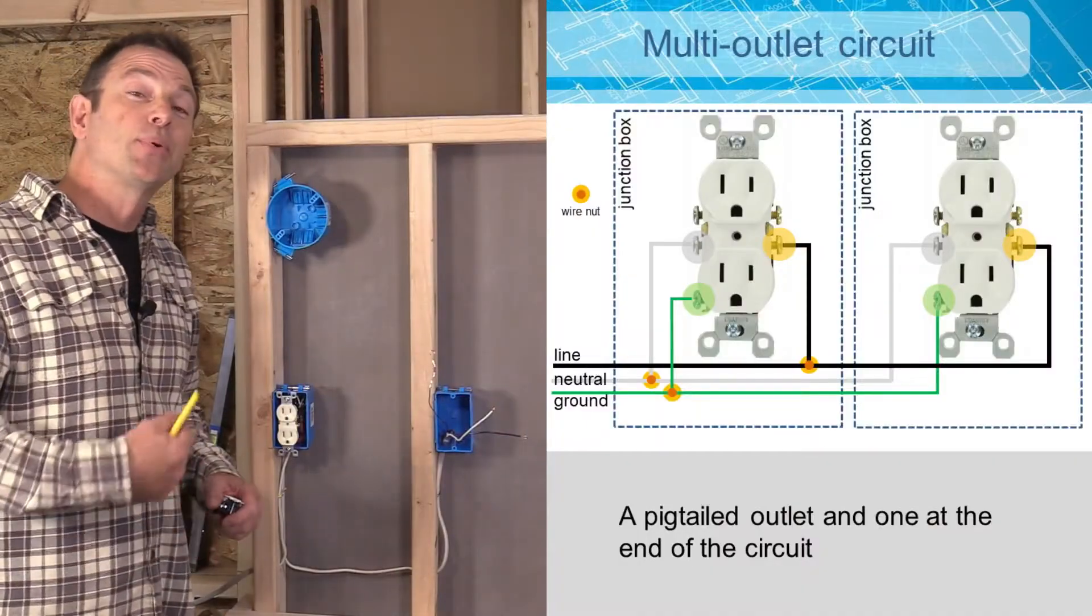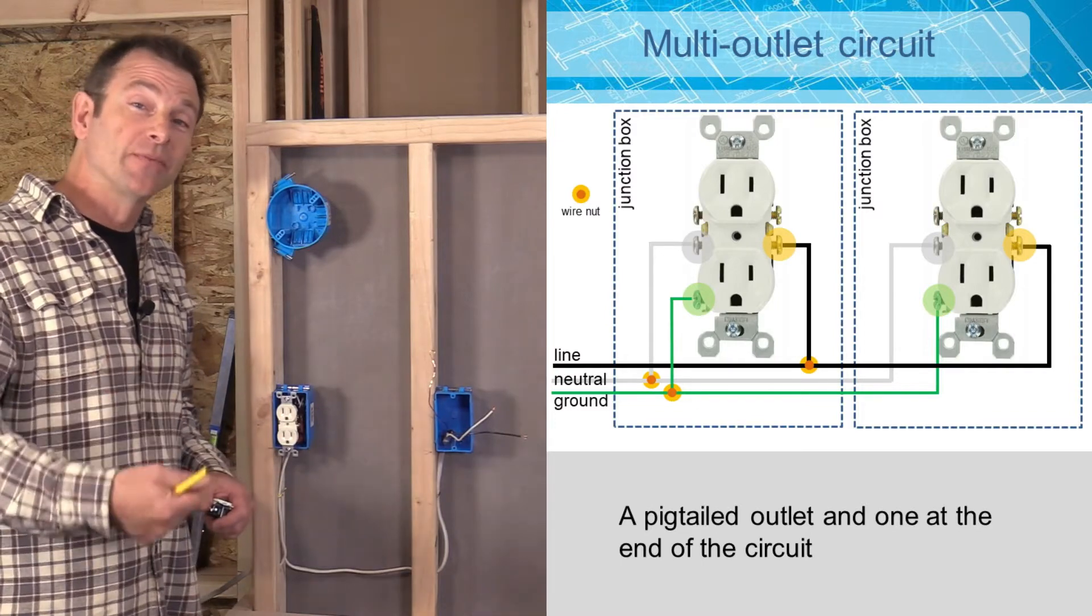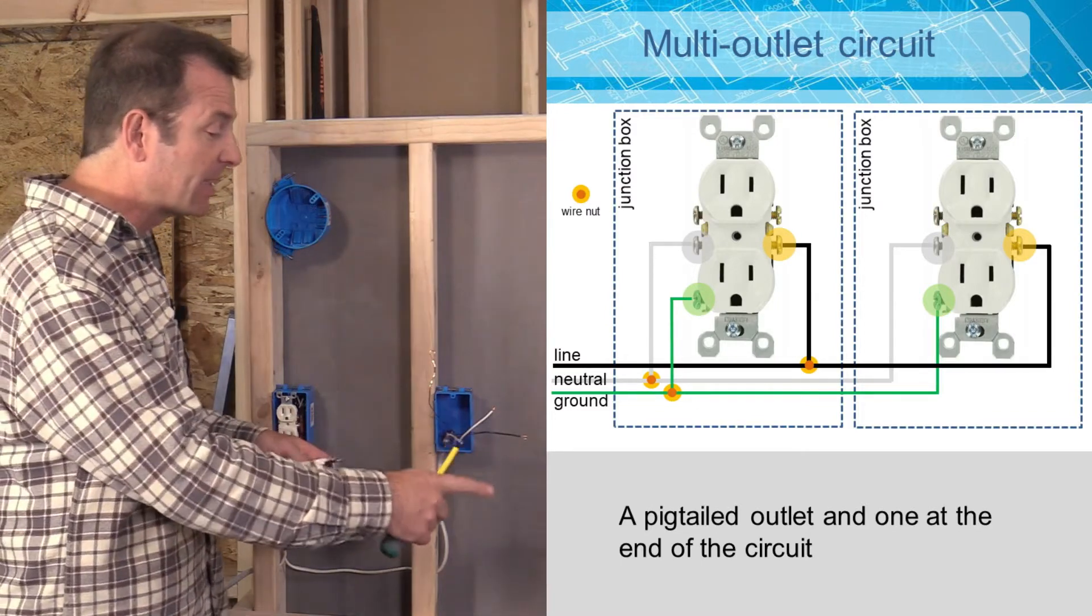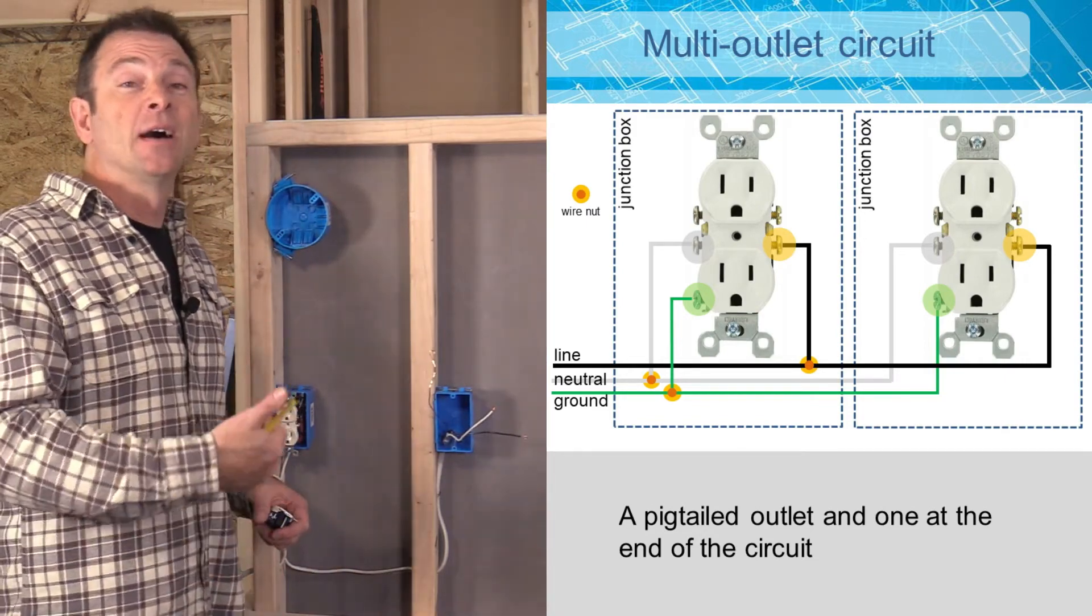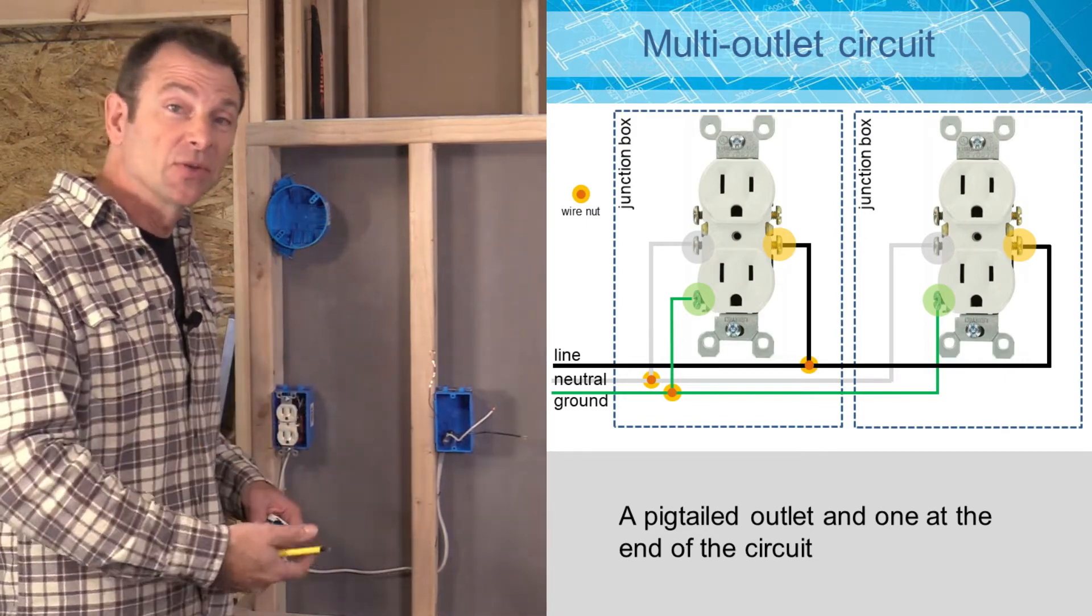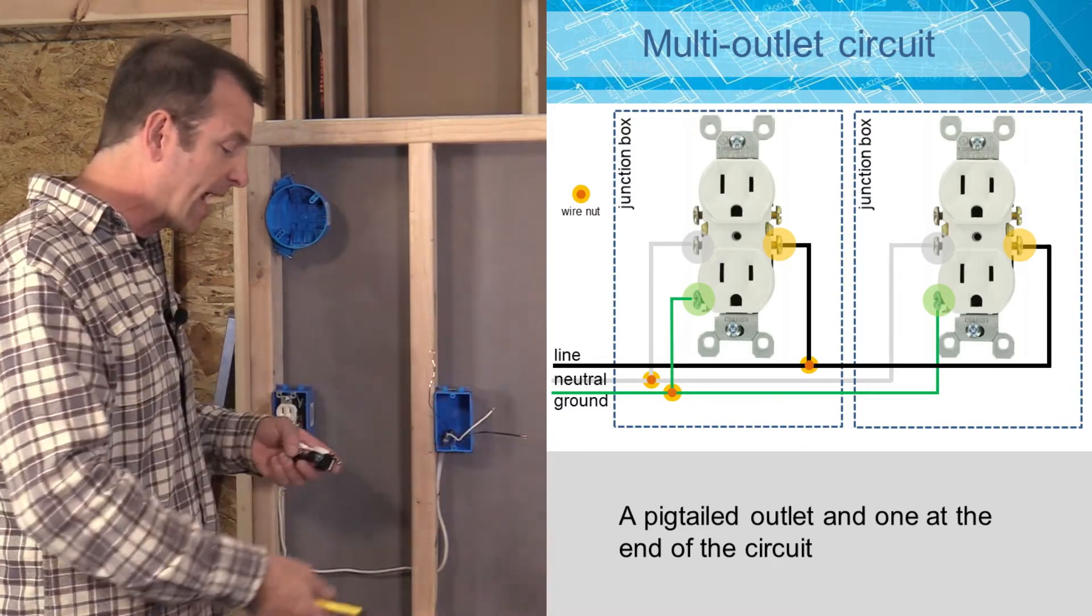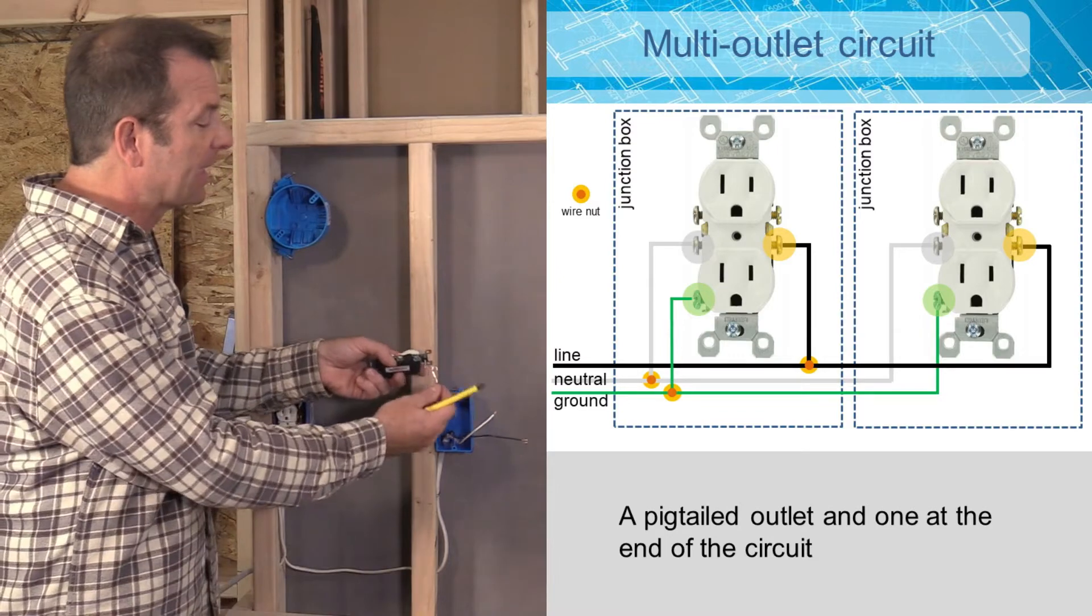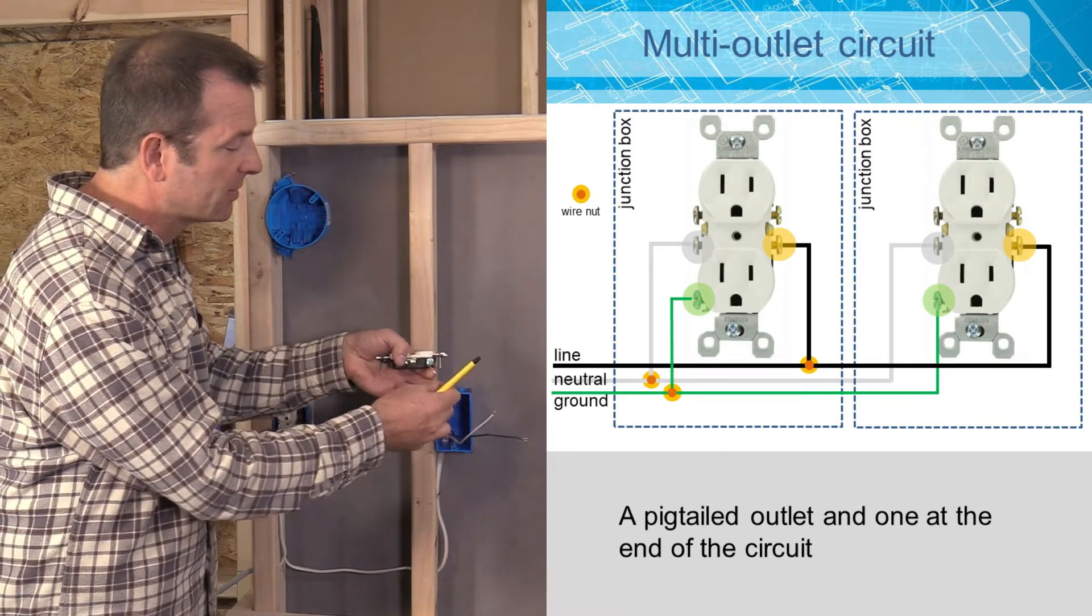Let's go ahead and put our last outlet in the circuit. If you remember, this is a review from a previous lesson. So this is very simple. I have three conductors. I'm going to do my typical sequence of going from my ground to my neutral to then my hot, which is bare to white to black. I'm going to match my bare copper wire to my ground terminal.